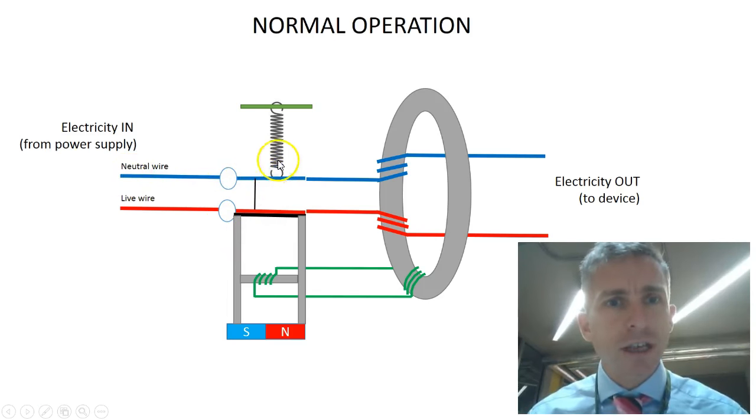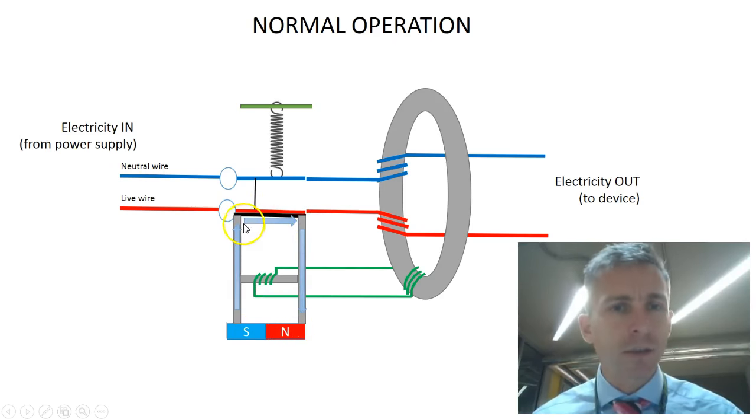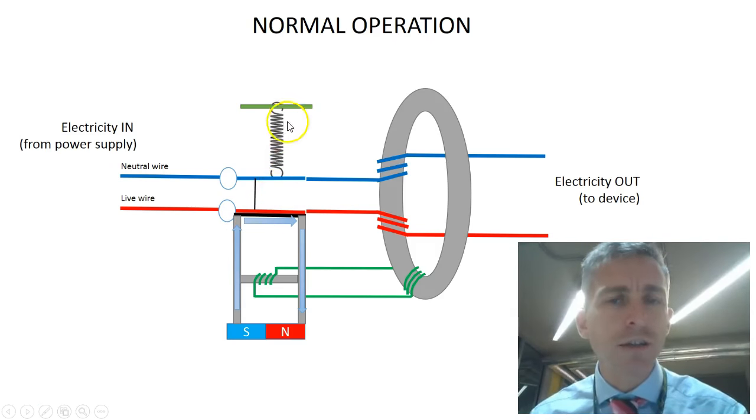Now the switch gear is held in place, or it's pulled up by this spring, but it's held in place by this magnetic arrangement here. The permanent magnet produces a magnetic field which flows through the iron part of the switch gear and back down to the north pole of the magnet. And so they are attracting the iron and it holds it down in place. It has to be a sufficient force to withstand the pulling of this spring.